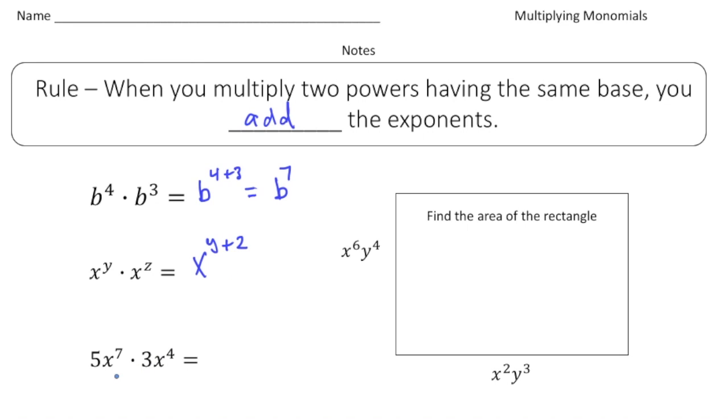Now this one's a little more complex. Our first monomial is 5x to the seventh, and then we have 3x to the fourth. So we have 5 and 3, so you multiply those numbers. Five times three is fifteen, and then we have x to the seventh and x to the fourth. Again they have the same basis, so it's going to be x to the seven plus four, which is eleven.